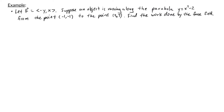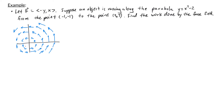In the next example, let f be the same force field (-y, x). This time the object moves along the parabola y equals x squared minus 2, from (-1,-1) to (3,7). Since the curve is defined as y equals a function of x, the parameterization is straightforward: r(t) = (t, t²-2) for t between -1 and 3. So x(t) = t and y(t) = t²-2.